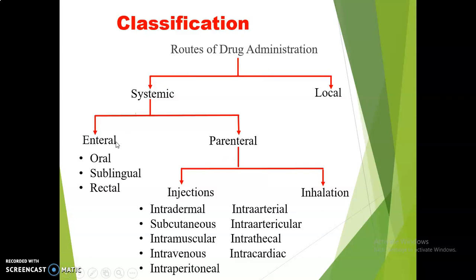Enteral route means the drug is introduced in any part of the GIT. These are again subclassified as oral route, sublingual route, and rectal route or enema. Whereas the parenteral route means the drug is introduced in any part of the body other than the GIT. These are again subclassified as injections and inhalation.